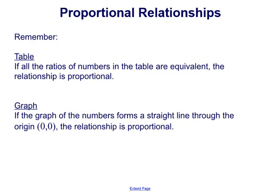But now, if you're looking at a graph, we have to see if the graph of the numbers forms a straight line and then passes through the origin. That is what determines if a relationship is proportional. Let's take a look at some examples of those now.